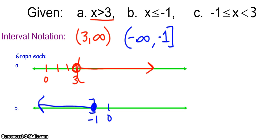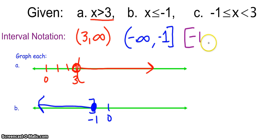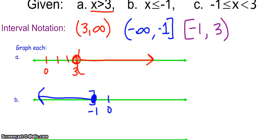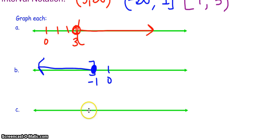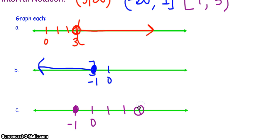This next one: negative 1 is less than or equal to x, which is strictly less than 3. Reading left to right, I want negative 1 as my smallest value and it's okay to be equal to negative 1. I want to go until 3, but I'm not allowed to actually touch 3. So I want everything sandwiched in the middle — from negative 1 (included) to 3 (not included). I could also write this as a bracket and a parenthesis instead of a closed circle and an open circle.